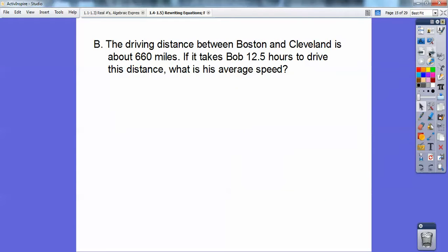Okay, what else do I have for you? The driving distance between Boston and Cleveland is about 660 miles. If it takes Bob 12.5 hours to drive this distance, what's his average speed? Remember distance equals rate times time. So I just plugged in the distance, which is 660, equals the rate, and it took Bob 12.5 hours. Divide 12.5 into 660, and he gets about 52.8 miles per hour. It must be a lot of curves and stuff or stoplights going through all the cities.